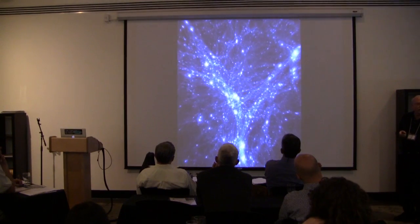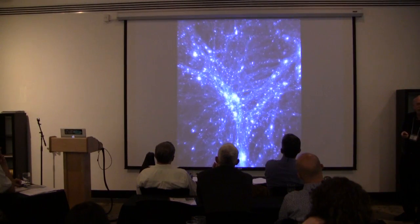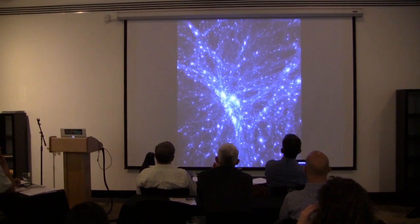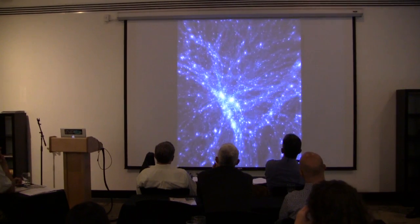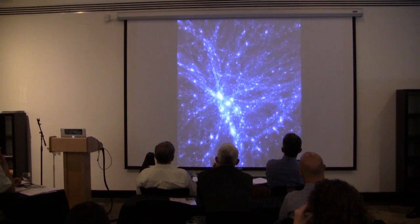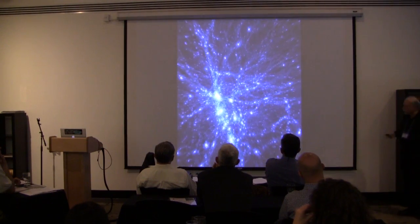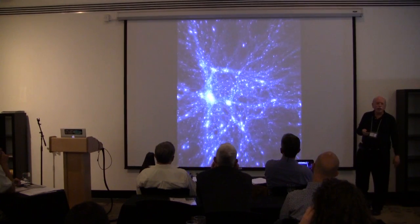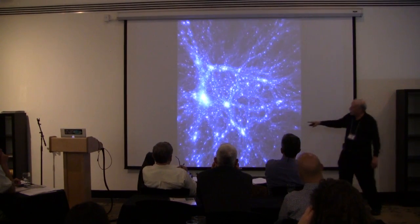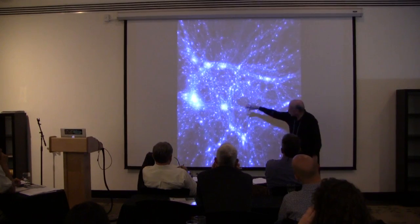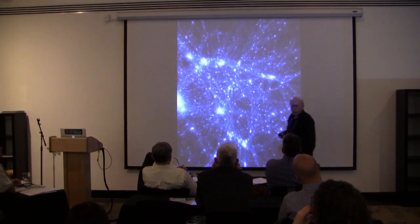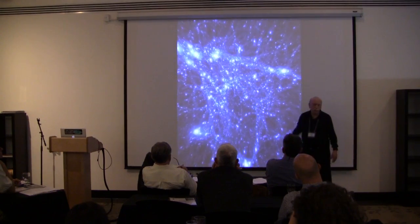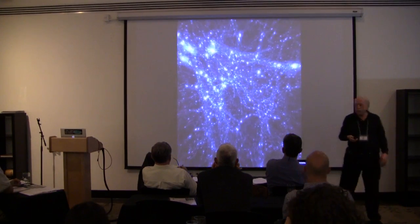This is a simulation of the local region of the universe. You see dark matter flowing along filaments toward the regions where filaments cross, and great dark matter halos that would host clusters forming. This is the CLUES program — the Constrained Local Universe Simulation — which lets us simulate the local universe including the Milky Way, Andromeda, the Virgo cluster, and so on. We're just flying through it. The simulation has finished and we can fly through it and enjoy the view.